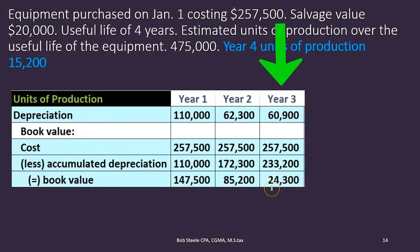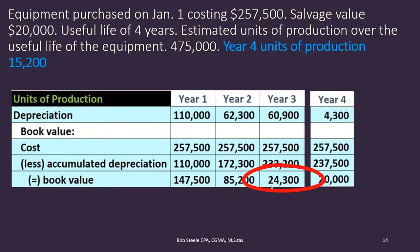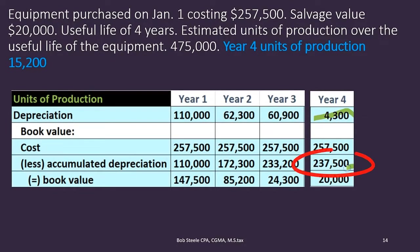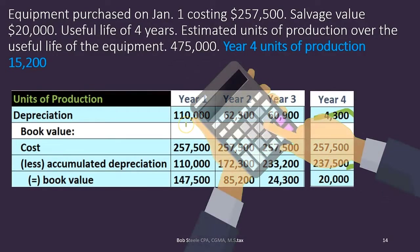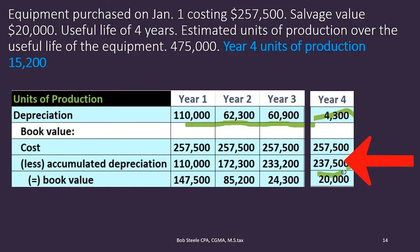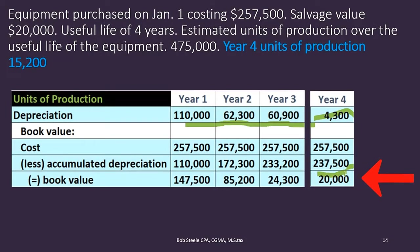Looking at the table: we left Year 3 with a book value of $24,300, and we need to depreciate $4,300 to bring accumulated depreciation to $237,500. Confirming: $233,200 + $4,300 = $237,500, or summing all years ($110,000 + $62,300 + $60,009 + $4,300 = $237,500) — same result. Cost $257,500 less accumulated depreciation $237,500 leaves book value of $20,000, equal to salvage value.